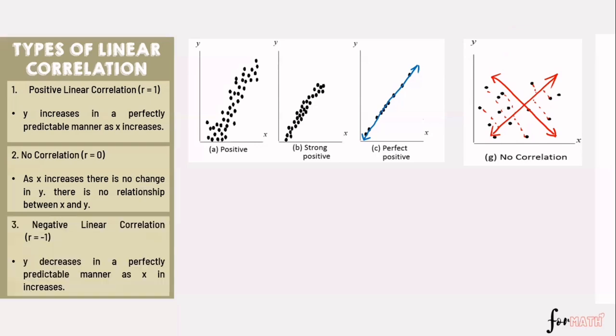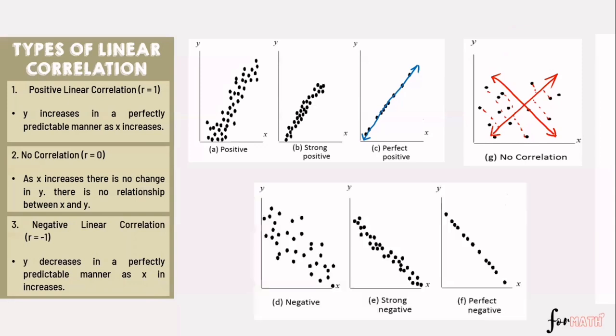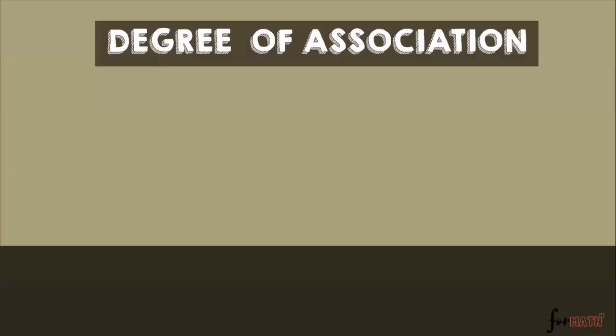Number two: negative linear correlation — y decreases as x increases. We have negative, strong negative, and perfect negative. For negative, the points are farther apart, suggesting a mild or moderate degree of association. For strong negative, the points are closer together. And for perfect negative, it forms a straight line.